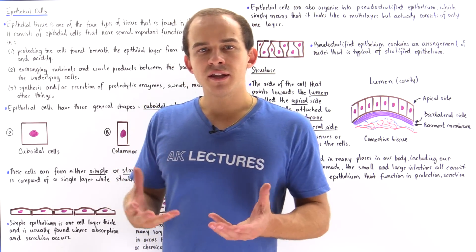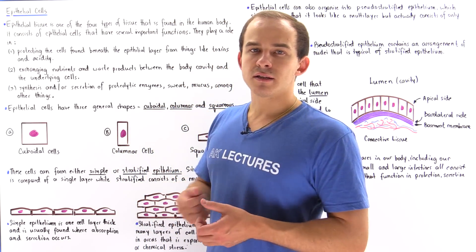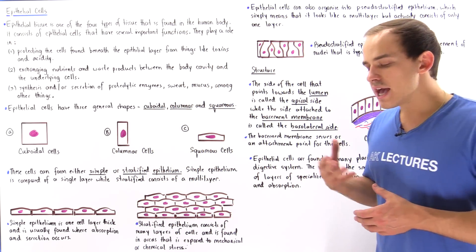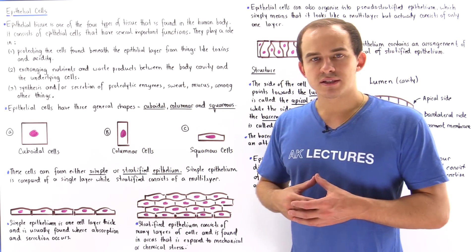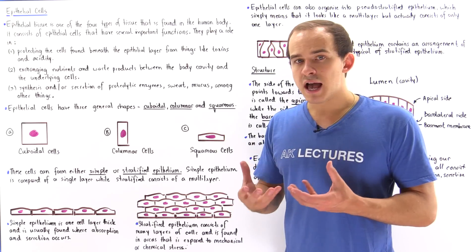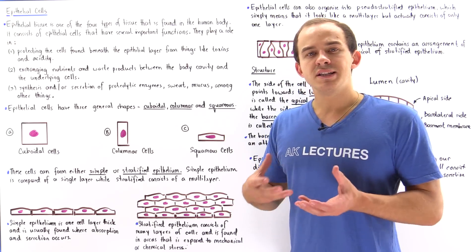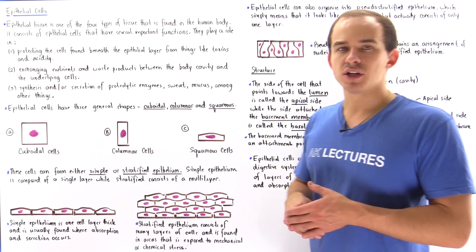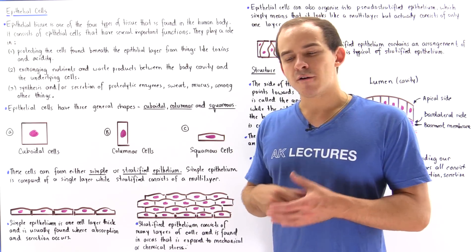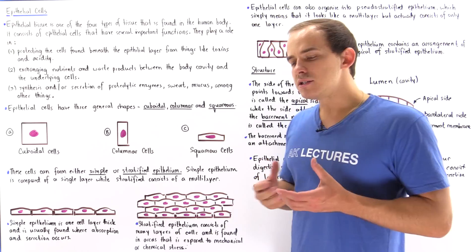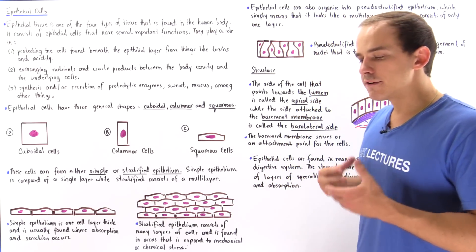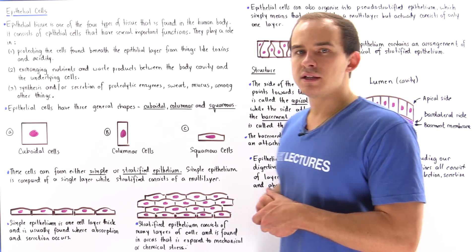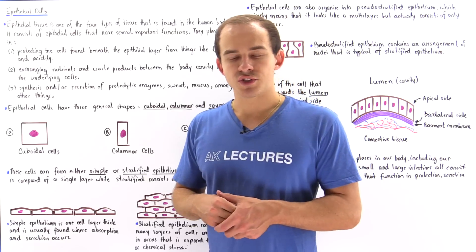Epithelium consists of specialized types of cells known as the epithelial cells, and these cells come in different forms and different shapes, as we'll see in just a moment. First, let's define what the function and the purpose of the epithelial tissue is.